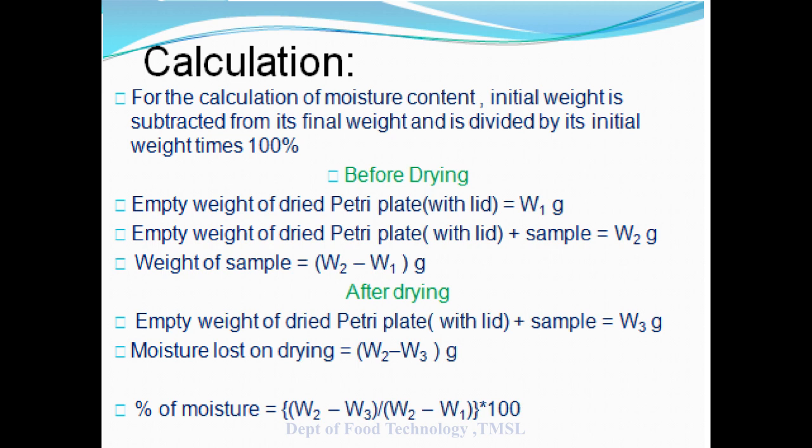The sample weight was W₂ minus W₁ gram. Moisture content in the food sample in percent is (W₂ - W₃) divided by (W₂ - W₁) multiplied by 100. It gives the percentage moisture content in the food sample.